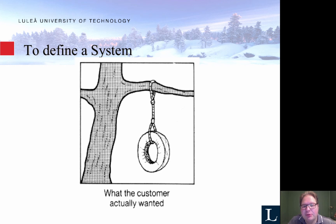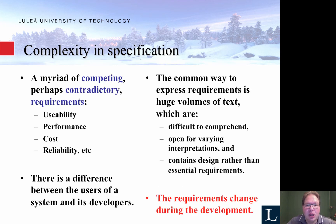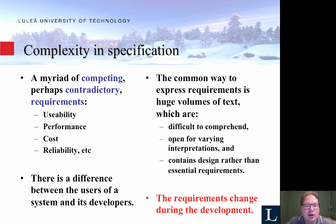So being able to capture these requirements correctly from the start is very, very important. Capturing these requirements is also difficult because sometimes they are competing, conflicting, or contradictory. They might say the system should be very useful and easy to use, but we should have high performance — it should be fast and reliable and never crash — but it should also be very quick and cheap to develop. Developing something that is very stable and reliable tends to take more time and therefore more cost, so those requirements are a bit conflicting. Being able to balance those is very important.